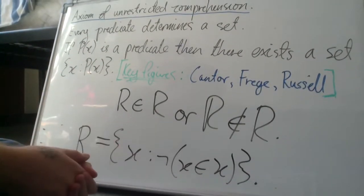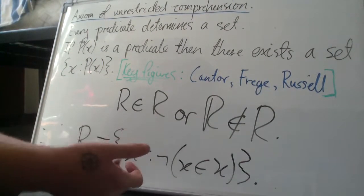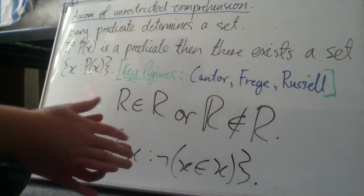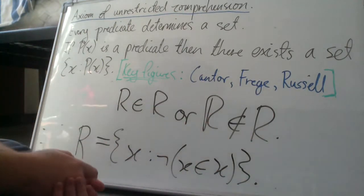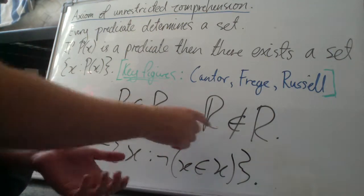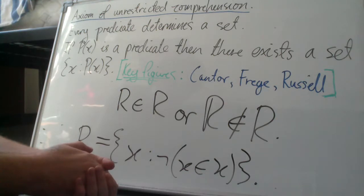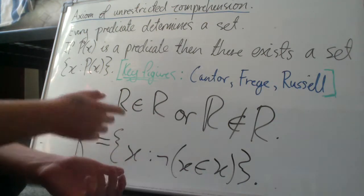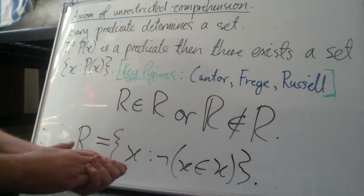Which is a contradiction. And we've reached a contradiction from both the left hand and the right hand side of this disjunction, the or statement. Since it can only be one or the other, that's what Russell's paradox is. We have shown that the axiom of unrestricted comprehension is incoherent.